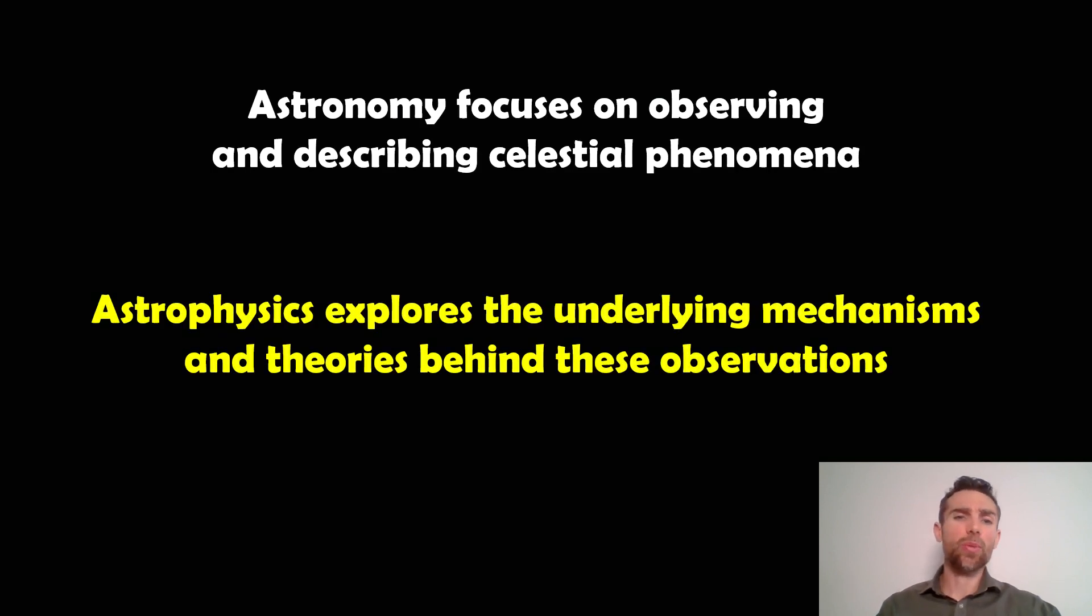Well, let's go back to astronomy. Astronomy is focusing more on the observational side of it and then describing those celestial phenomenon. So it's about actually making an observation and reporting and describing what you're actually seeing. And astrophysics is a little bit different in the sense that it explores the underlying mechanisms or the physics and theories behind these observations. So what you actually find is that an astronomer might go out to make some observations and they would report, this star is this temperature, it's this size, it's this mass, and then an astrophysicist might actually then decide or try and figure out why that's the case.